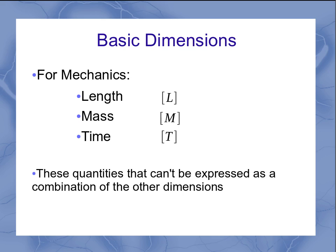We call these quantities basic because each of these three—length, mass, and time—cannot be expressed as a combination of the other dimensions. Length isn't related to mass and time, mass isn't related to length and time, and time isn't related to length and mass.